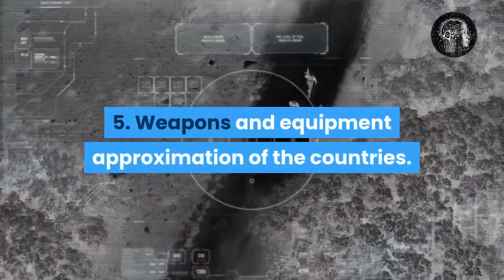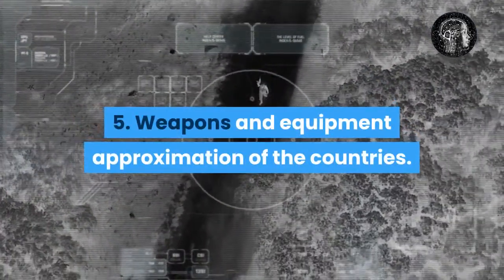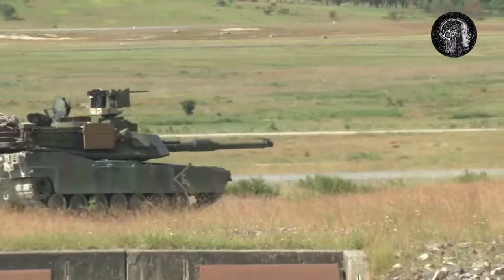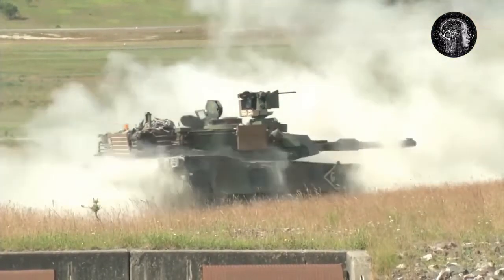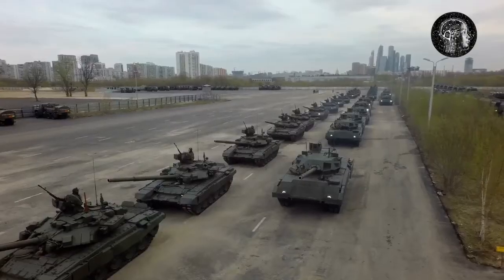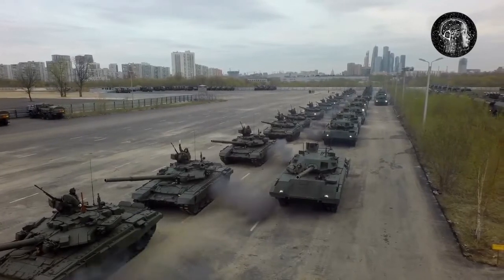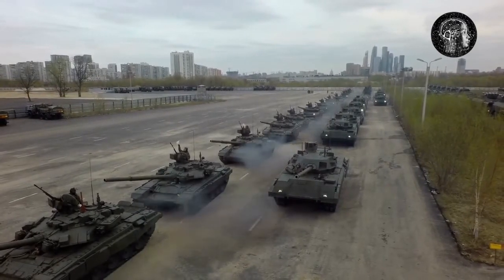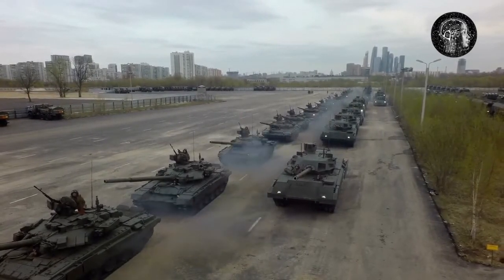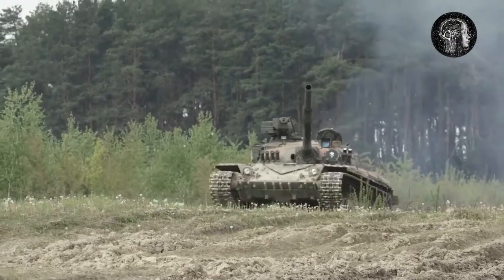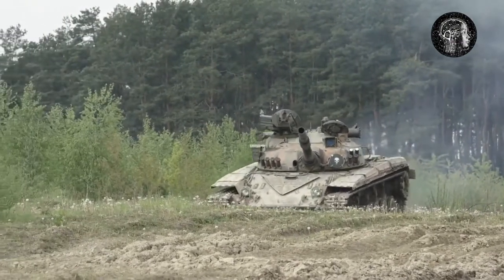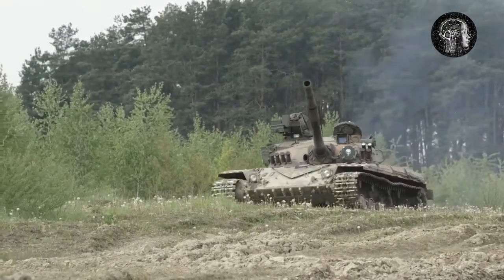Number five: Weapons and equipment. For the land forces, India has 4,426 tanks, 5,681 armored fighting vehicles, and 5,067 total artillery pieces. Whereas Pakistan has 2,735 tanks, 3,066 armored fighting vehicles, and 3,745 total artillery pieces.